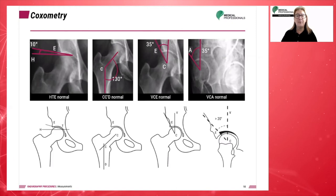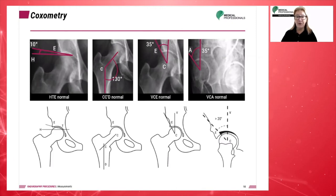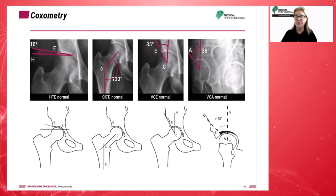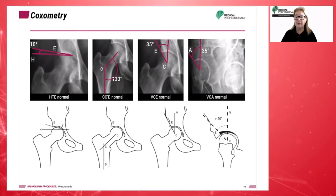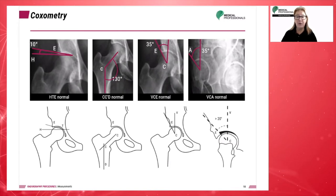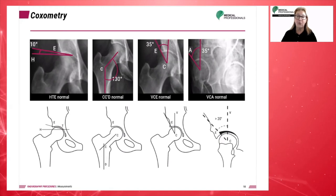Lateral coverage of the femoral head is measured by drawing a vertical line passing through the head of the femur, and then a second line passing through the lateral edge of the acetabular roof crossing the center of the femoral head. This angle must be greater than 25 degrees to be considered normal.